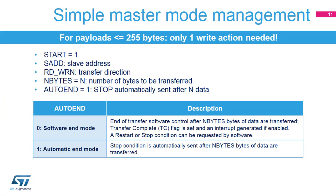Master mode software management is very simple. Only one write action is needed to handle a master transfer with a payload smaller than 255 bytes, and the full protocol is managed by hardware. To start a transfer in master mode, I2C control register 2 must be written with the start condition request, the slave address, the transfer direction, the number of bytes to be transferred, and the end of transfer mode. End of transfer mode is configured by the auto end bit; if it is set, the stop condition is automatically sent after the programmed number of bytes is transferred.